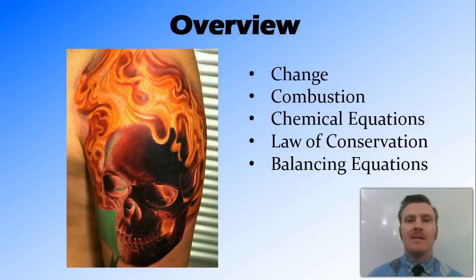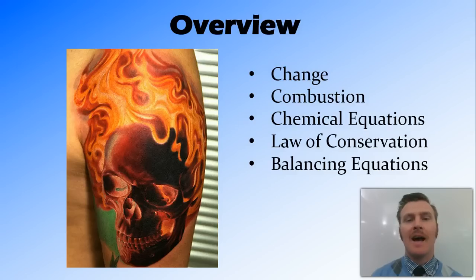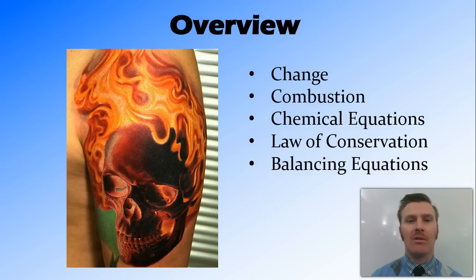In this video we've revised the concept of change, and in particular chemical change. We've looked at combustion as an example of chemical change, where a fuel reacts with oxygen in an exothermic reaction that produces heat. We've also looked at how to write word and chemical equations for this reaction, and the law of conservation of mass — which states that we need the same number and type of atoms in the reactants and products. Finally, we've looked at how to balance chemical equations to satisfy the law of conservation of mass.